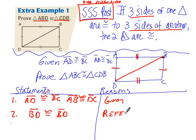Since they're both sharing it, they both have the same length. And now we have three sides congruent. We can say triangle ABC is congruent to triangle CDB.